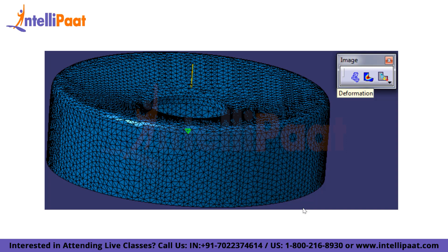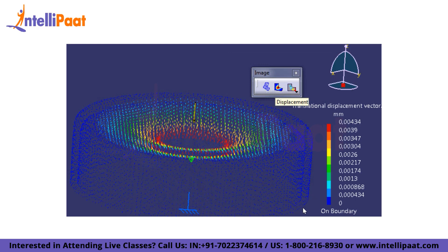Next is post-processing. The main post-processing toolbar is called Image. To view the deformed shape, use the deformation icon. Keep in mind that displacements are scaled considerably so you can observe the deformed shape — the image can be deceiving as the wrench does not actually displace to that extent. Displacement is also available on the image toolbar, with color and length of arrows representing the size of displacement.